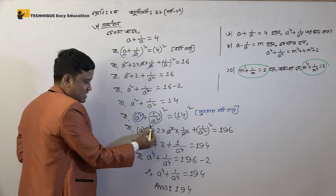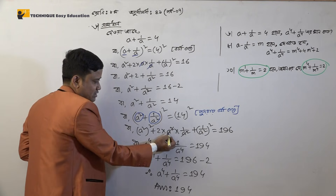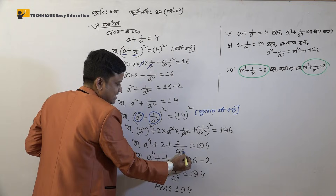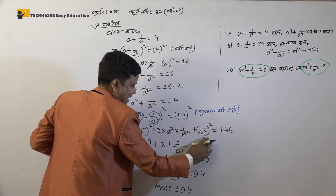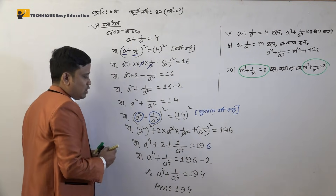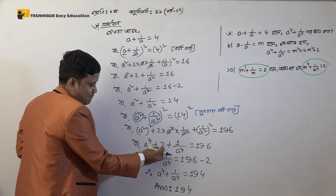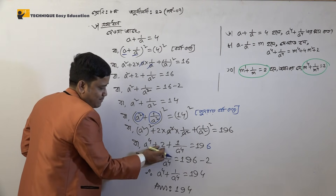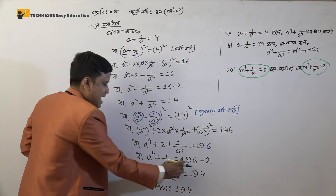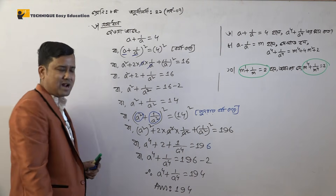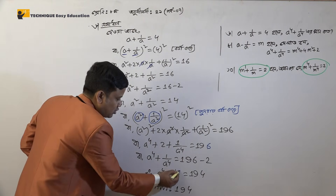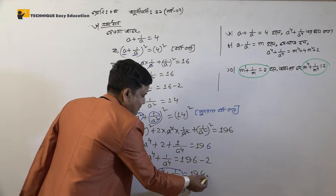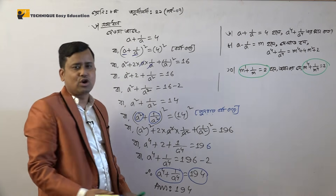A plus B whole square is A squared plus 2AB plus B squared. 2, 2, 4. 1 squared, 1, 2, 2, 4 equals 100. So here 2 plus, that is minus. Minus and by 1 minus to 1, and by 2 plus minus. If you get A power 4 plus 1 by A power 4, then plus 1 by A power 4 is 104.